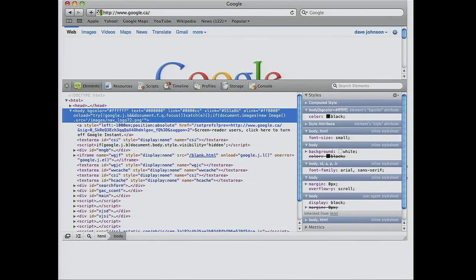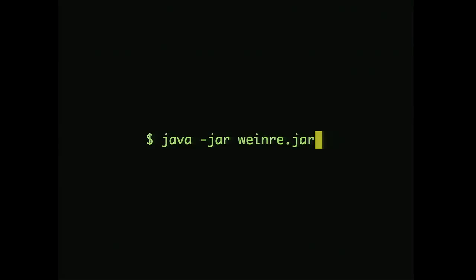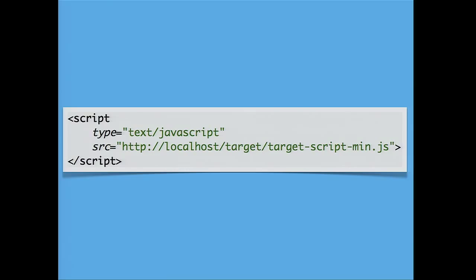He's contributed it to the PhoneGap mobile phone platform development framework. It's using the WebKit developer tools to inspect code that's running on your actual device. It has a server you run on your computer or on a server wherever you like — it's currently a Jetty server. You have a little script you put into your web page or PhoneGap application, and that references back to the Jetty server.